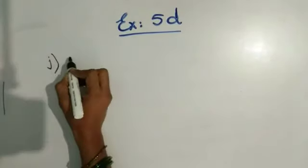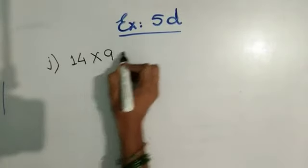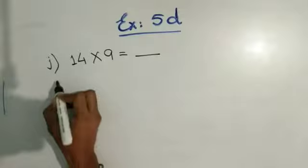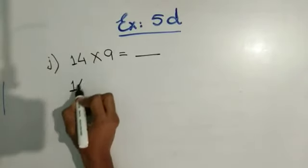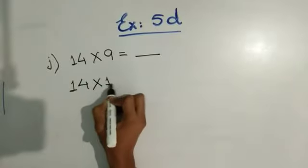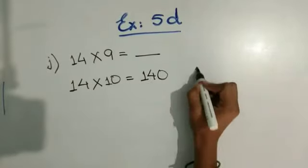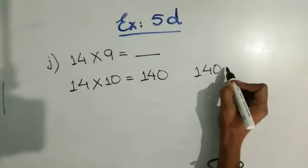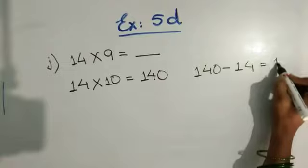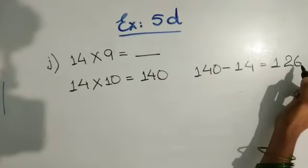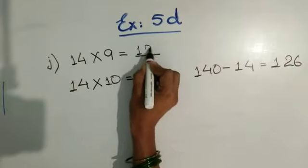Now next question. This is 14 multiplied by 9 is equal to what? So we will multiply 14 into 10, we will get 140. Now 140 minus 14, we will get 126. So our answer is 14 nines are 126.